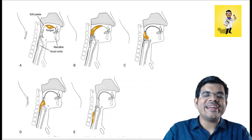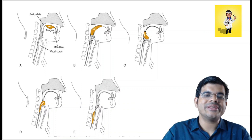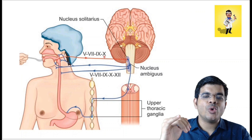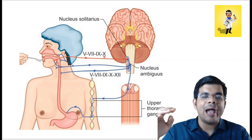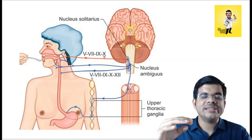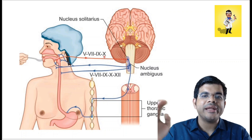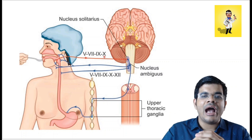Swallowing requires the coordinated activity of about 33 pairs of muscles, innervated by the 9th, 10th, 11th, and 12th cranial nerves, as well as the 5th and 7th cranial nerves. These inputs converge on the nucleus tractus solitarius — the afferent center in the medulla — and the nucleus ambiguus, which is the efferent center. There is also the central pattern generator for swallowing coordination. These topics will be discussed in detail in another class. Goodbye.